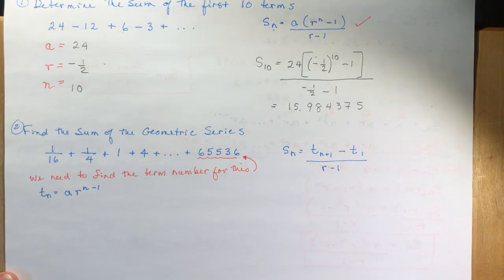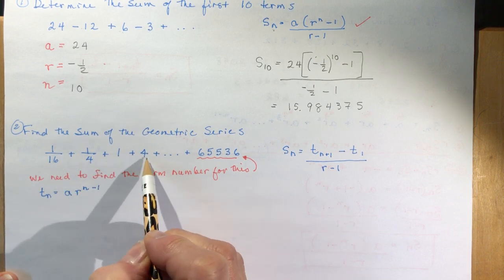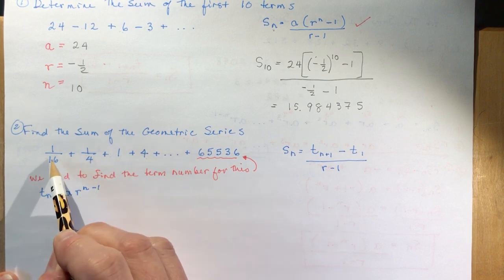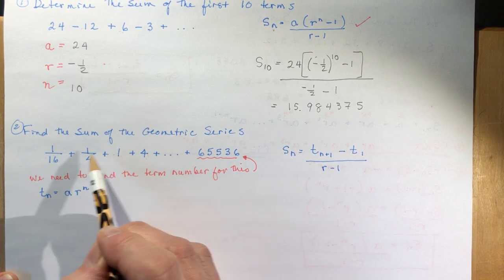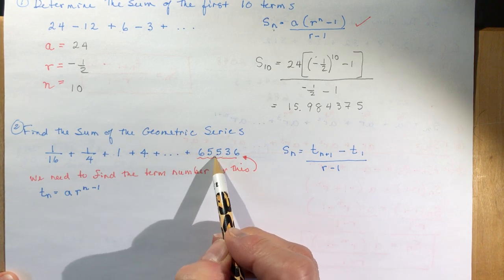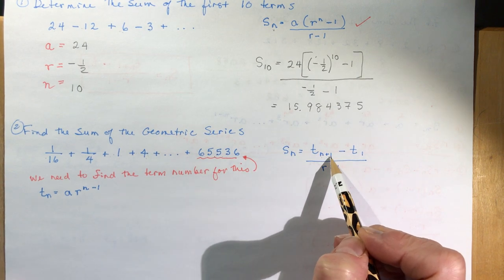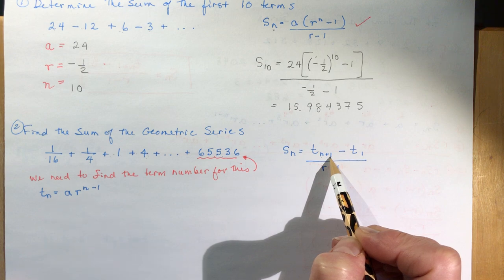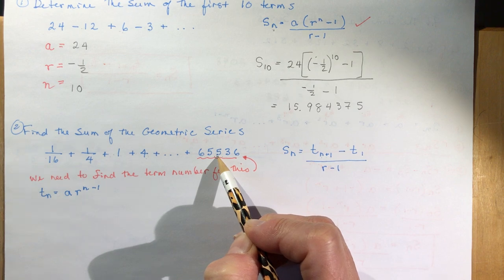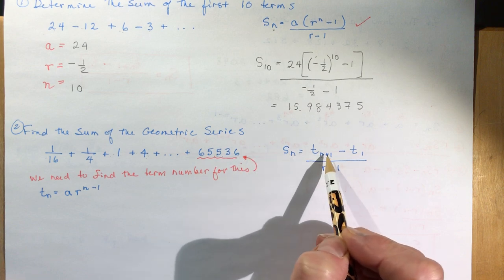Find the sum of the geometric series given: 1/16, 1/4, 1... You can see right away we're multiplying by 4. If I want the sum and I know the last term, I could find tn plus 1 by multiplying the last term by 4, going one step farther. I have t1, so the only thing I'm missing is what term number the last term is. When you have the first and last term, most often you'll have to find that term number.